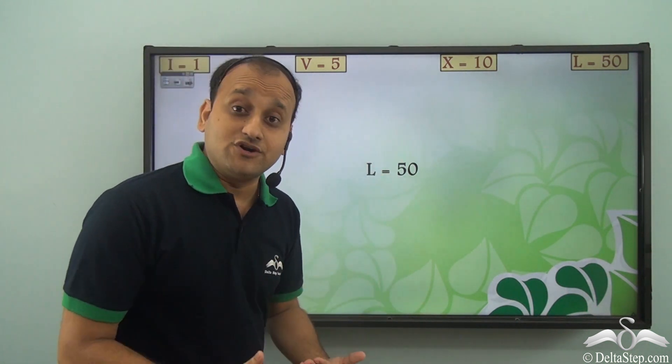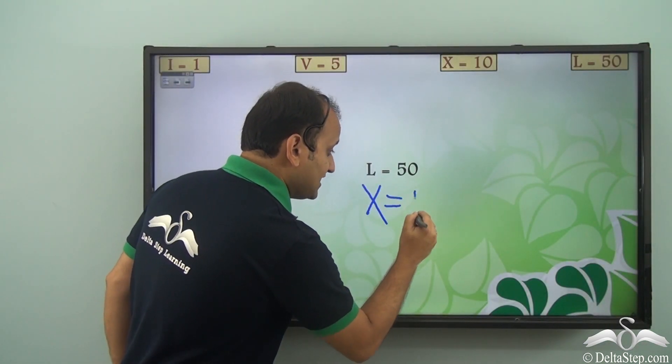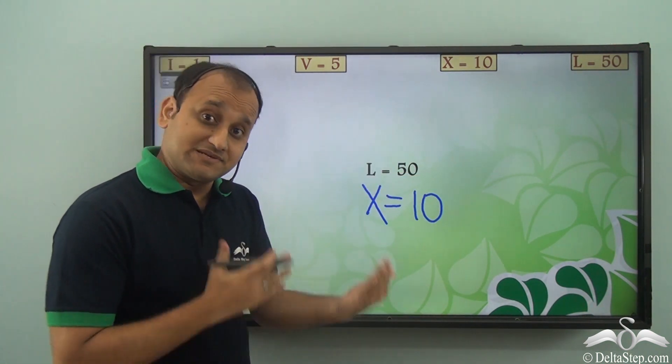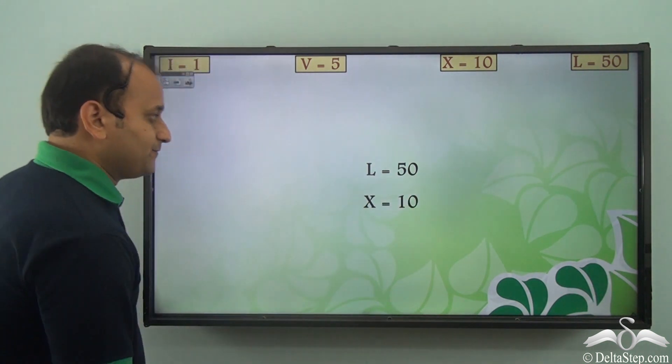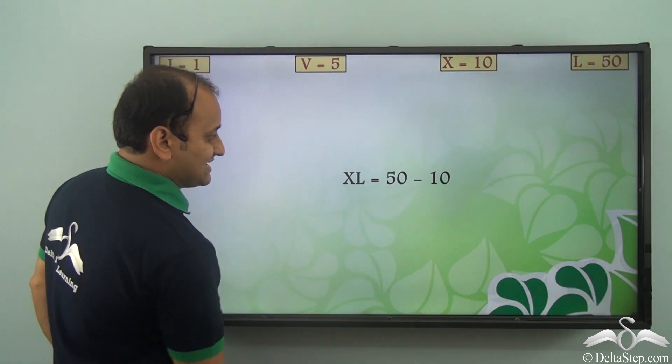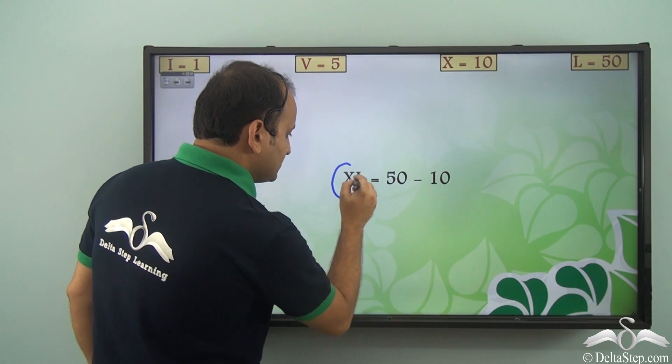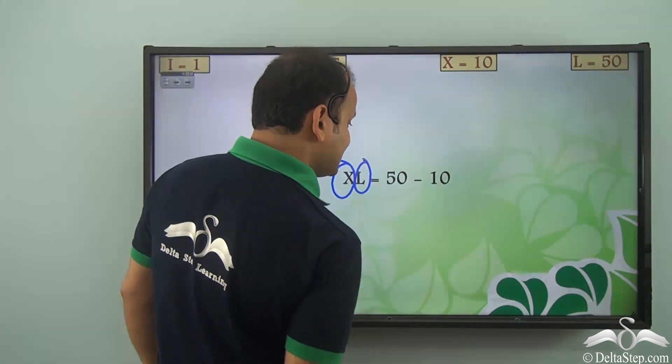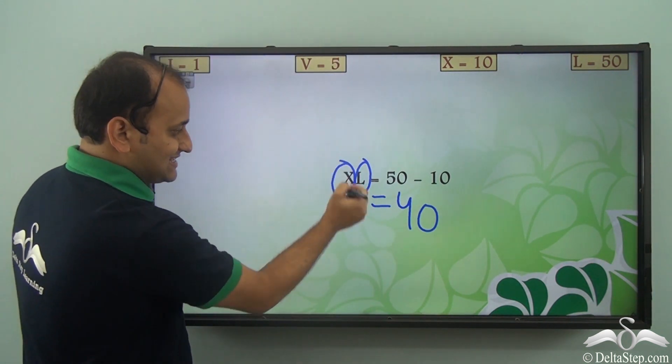Now in terms of 50, if we want to write 40 we'll have to subtract 10. So we'll have to use this symbol as well which is X. So we have 50 and 10, only then we can represent 40. So we have L equal to 50 and X is equal to 10. Now to write 40 we'll have to write 50 minus 10. Now 50 minus 10 is nothing but X to the left of L. Because we know that whenever we have a symbol to the left of a larger symbol, then it is subtracted. So in this case it is 50 minus 10, which is nothing but 40. So we can write XL is equal to 40.